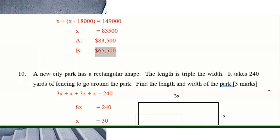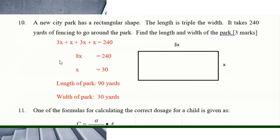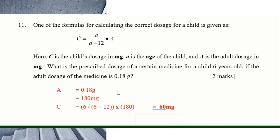Number ten: a new city park has a rectangular shape where the length is triple the width. The perimeter is 240 yards. If the width is x, the length is 3x. So the perimeter is x plus 3x plus x plus 3x equals 240. Solve to find x, giving you the width and the length.